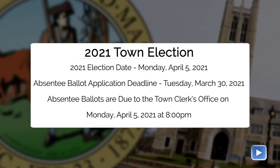Anybody that wants to vote absentee through the mail must fill out an absentee ballot application before a ballot can be mailed to them. The deadline to apply for an absentee ballot application is Tuesday, March 30th. The absentee ballot application can be found on the town of Noahid website, and you can also call the town clerk's office and we can mail one to you.